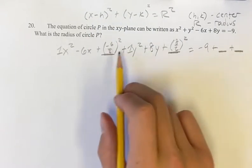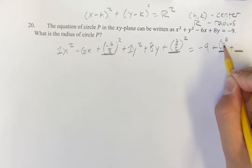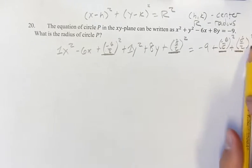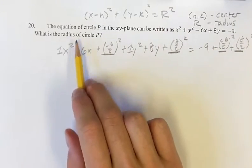But remember, we have to add these two to both sides. So you have negative 6 over 2 squared, and then 8 over 2 squared. Again, this is going to be r squared, which is what we're looking for. We're looking for the radius.